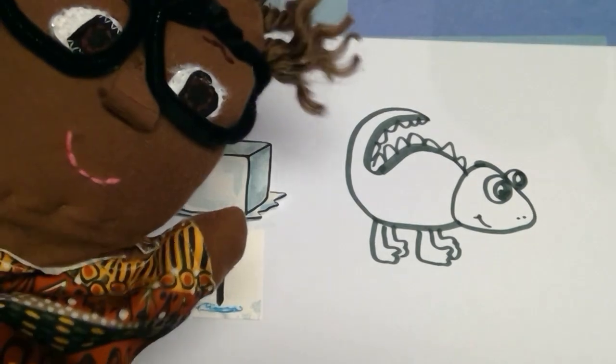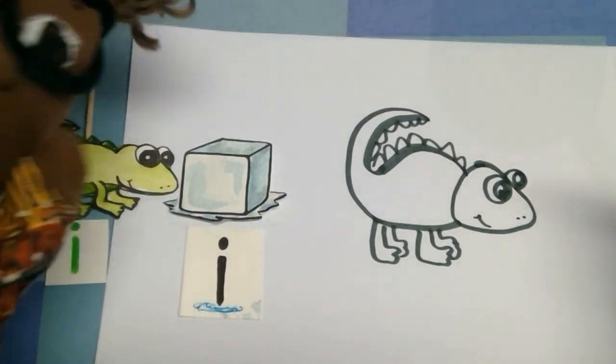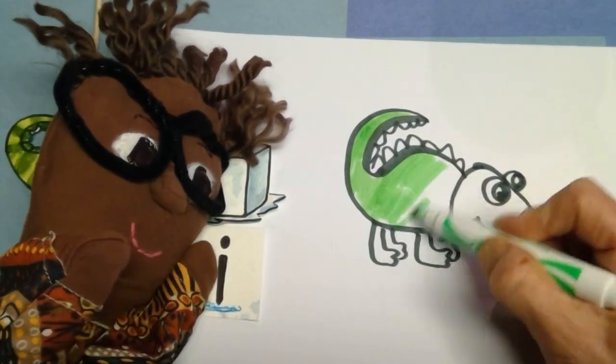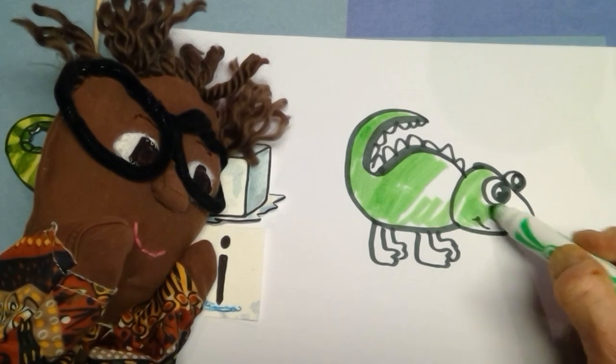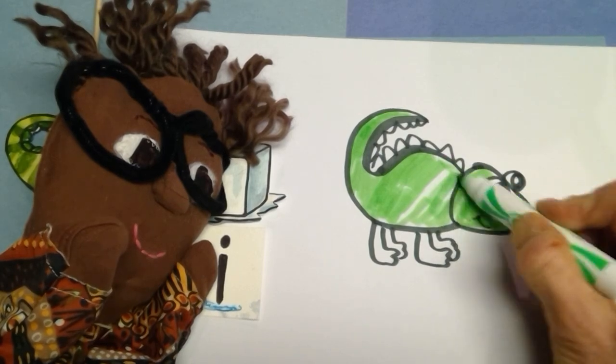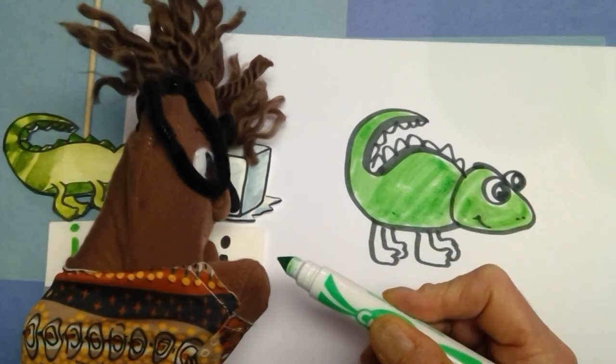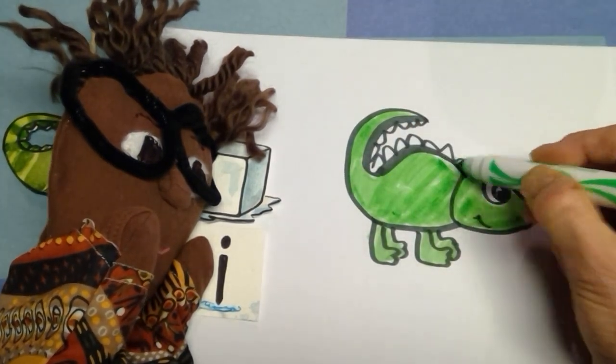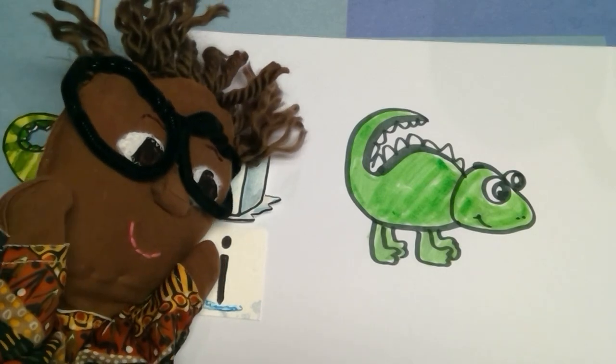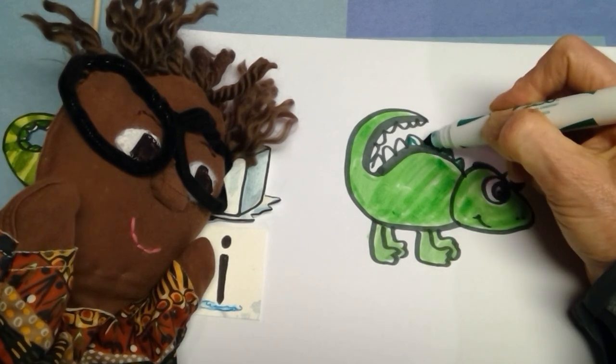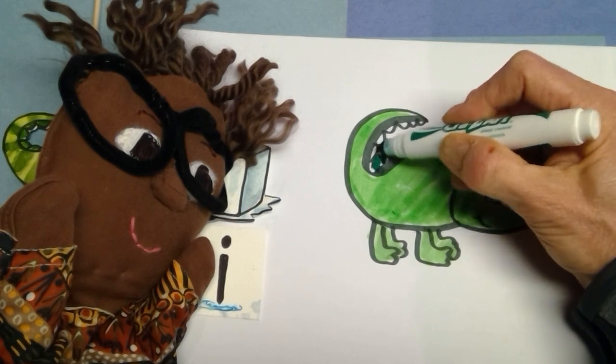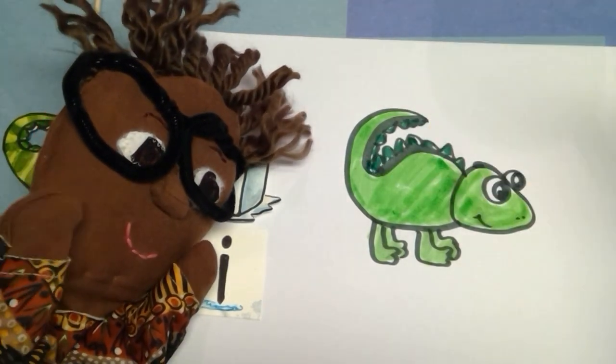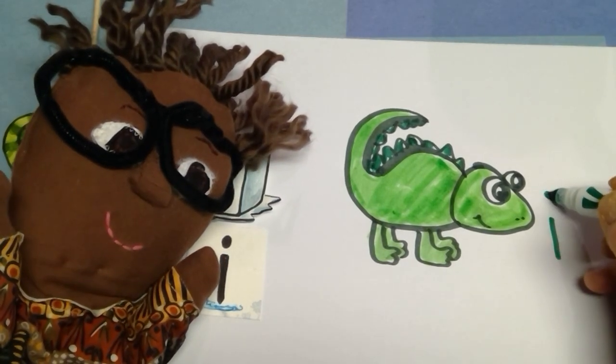Go ahead and get a light green marker. Color them all in except for his eyes. Color away. Watch out for the eyes. Good job. Remember, if you color on the side of the marker, it makes a bigger mark. It makes it a little faster. And then the point is to get in smaller areas. Maybe get a dark green marker or brown if you don't have dark green. Color in the spikes. There's our little Iggy iguana. We're going to give him a green.